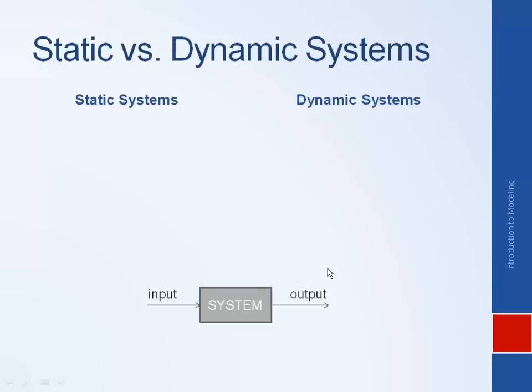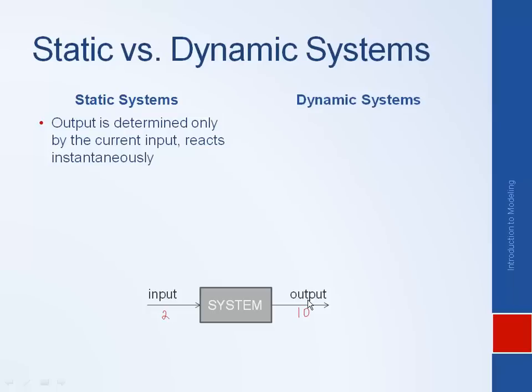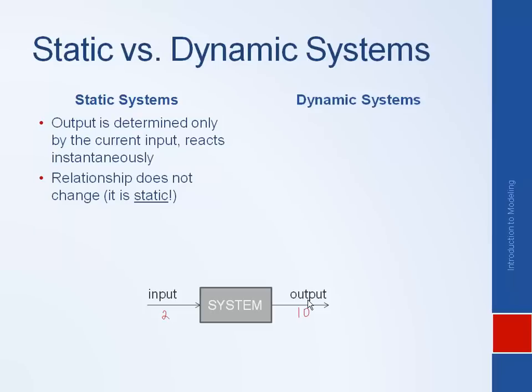Another thing that we're going to introduce is the idea of the difference between a static system and a dynamic system. And so this is sort of to go along with models of different levels of complexity. So a static system, the output is determined only by the current input and it reacts instantaneously. So for example, if this is our system and I give it an input of 2, the output will change to 10 instantaneously. And whenever I put a 2 into the system, I will always get a 10 out. And so the relationship between the input and the output does not change. It's static. Every time I put in a 2, I always get out a 10. Furthermore, this relationship can be represented by an algebraic equation.